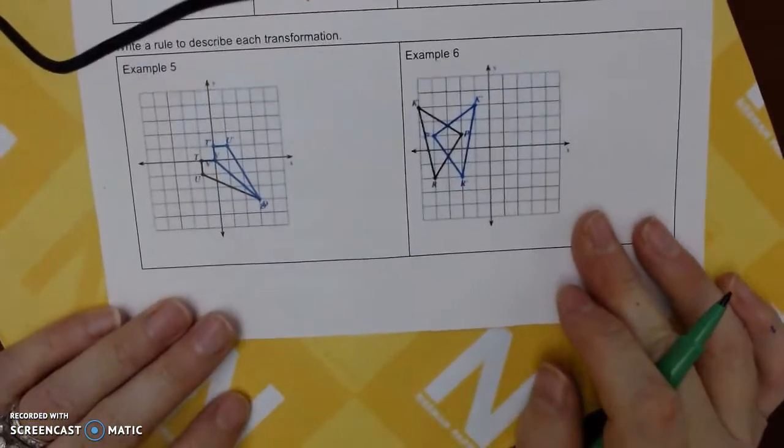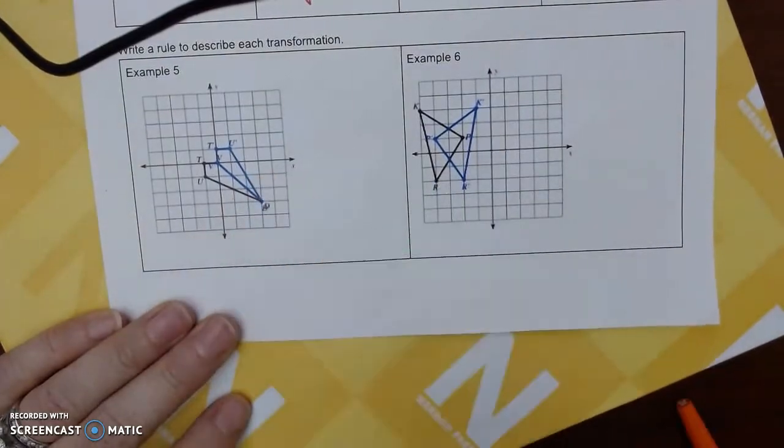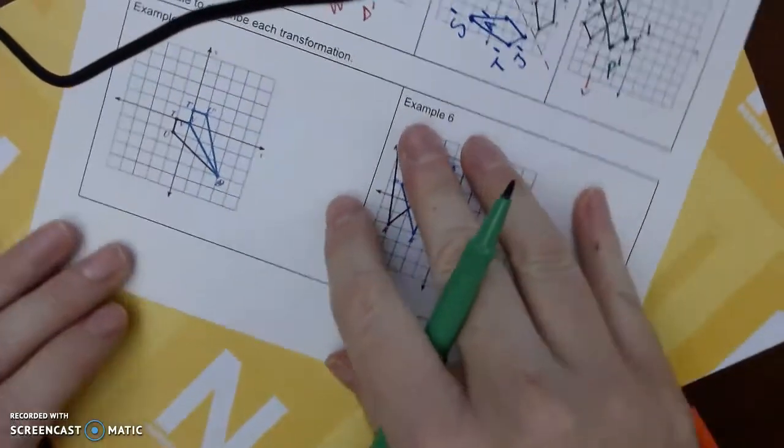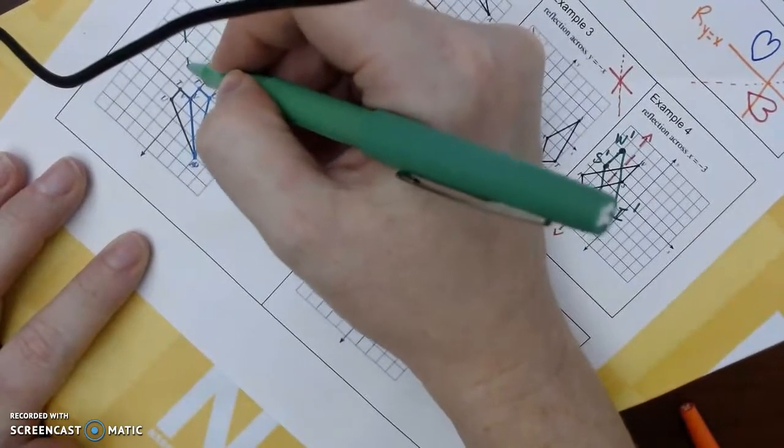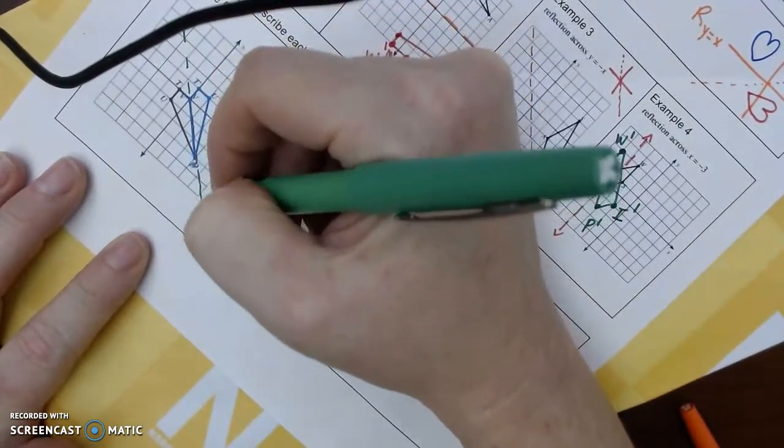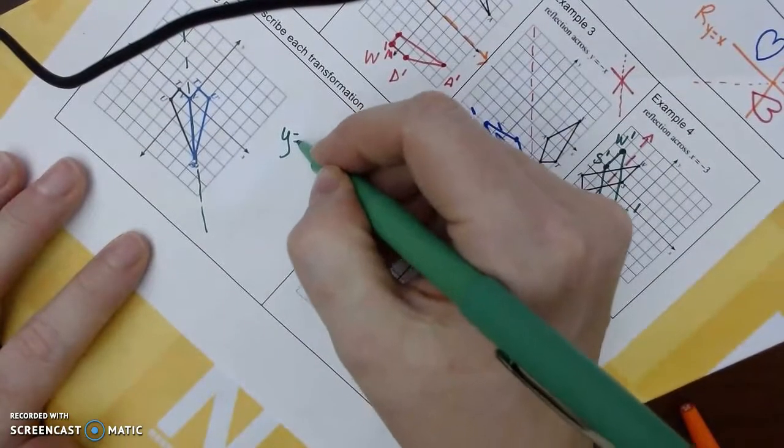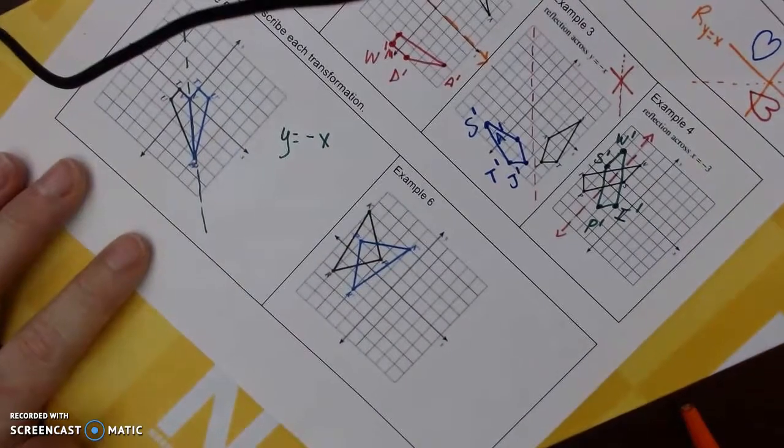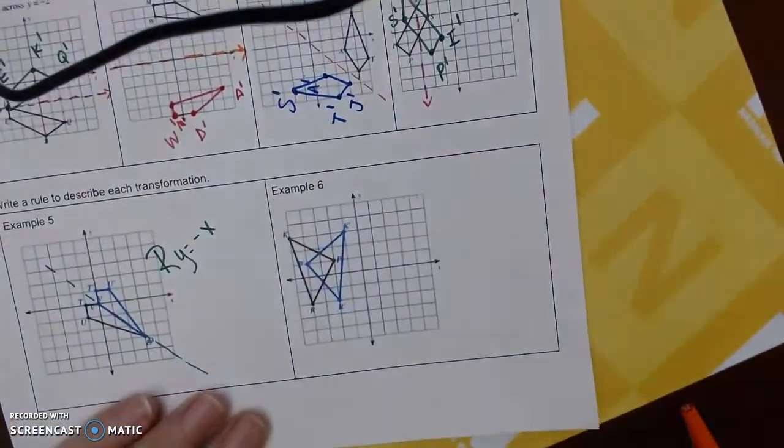So number five is kind of going backwards, so first I have to figure out like where did they put that mirror. So if I look, I turn it, my black and my blue, it kind of looks like it's right down the middle, which is what we just did with y equals negative x. Okay, so we're going to make that R.